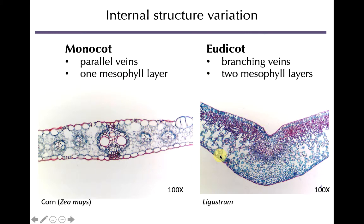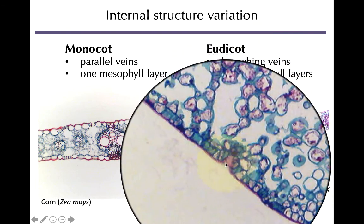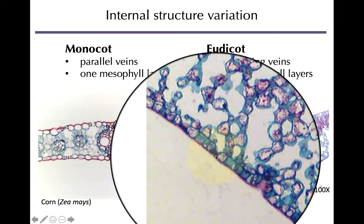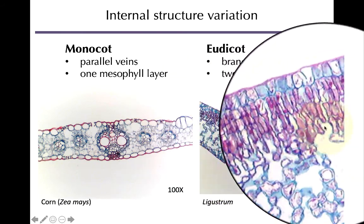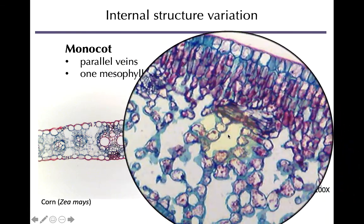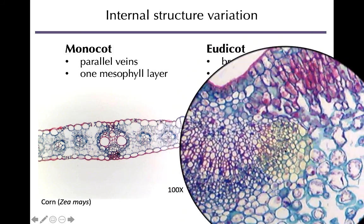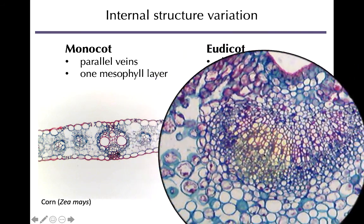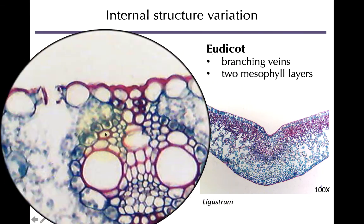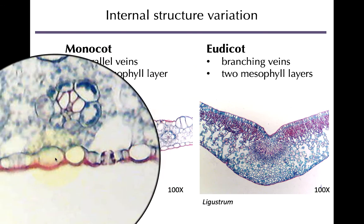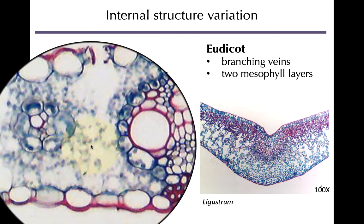Looking at cross-sections: in the eudicot, you can see epidermis on top and bottom, guard cells and stoma, the more tightly packed palisade parenchyma layer, and the spread-out spongy mesophyll below it, plus a main vein with branching veins. These two mesophyll layers identify it as a eudicot. In the monocot, you can see the parallel vein structure and just one mesophyll layer. Guard cells and stoma are clearly visible, with air pockets throughout — all of the mesophyll performing photosynthesis.